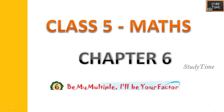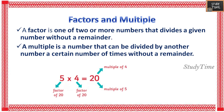Class 5 Maths, Chapter 6: Factors and Multiples. First, we'll see what is a factor and what is a multiple. A factor is one of two or more numbers that divides a given number without a remainder. For example, let us take 10 and check whether 2 is a factor of 10. When you divide 10 by 2, the remainder is 0, therefore 2 is a factor of 10.